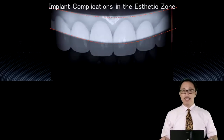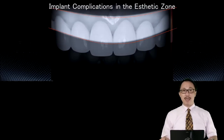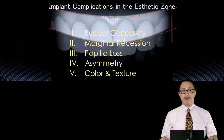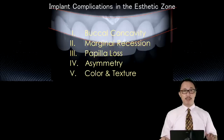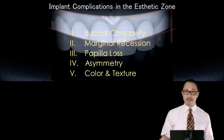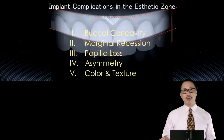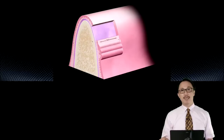I would utilize five pink dilemmas to analyze the implant complication in the aesthetic zone, trying to find out if there is a buccal concavity problem, marginal recession problem, papilla loss, asymmetry, or problem with color and texture.